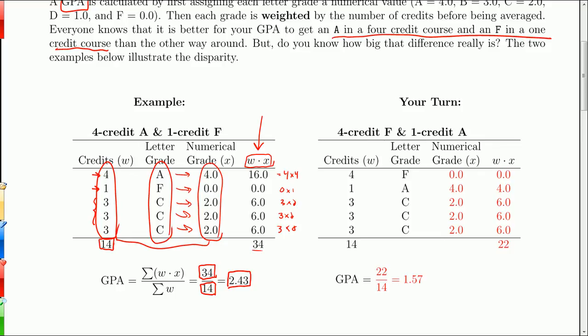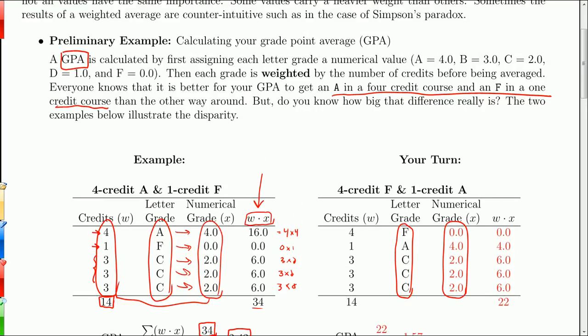So in the Your Turn problem, you're given this report card, F, A, C, C, very similar to the last report card, only now you've got an F in the 4-credit course and an A in the 1-credit course. And the numerical grades are calculated the exact same ways. It goes like the numerical grades come from here. A is 4, B is 3, C is 2, D is 1, and F is 0.